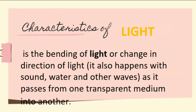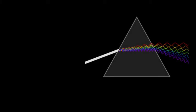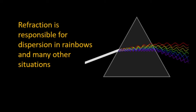One characteristic of light is refraction — the bending or change in direction of light as it passes from one transparent medium into another. This change of direction is caused by a change in speed. For example, when light travels from air into water, it slows down, causing it to continue traveling at a different angle or direction. Refraction is responsible for dispersion in rainbows and many other situations.